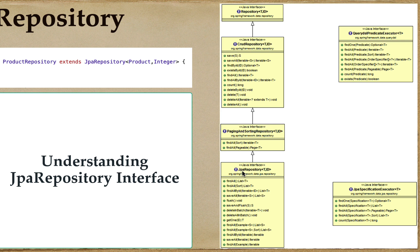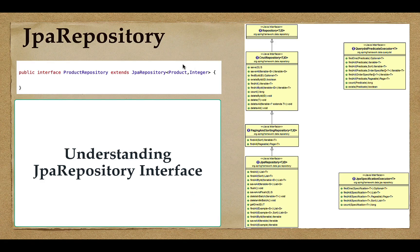Apart from that, JpaRepository also exposes a few methods that support batch operations and other operations — for example: findById, findAll with Sort as a method argument, flush, saveAndFlush, deleteInBatch, deleteAllInBatch, and saveAll. These are some of the methods that JpaRepository also exposes.